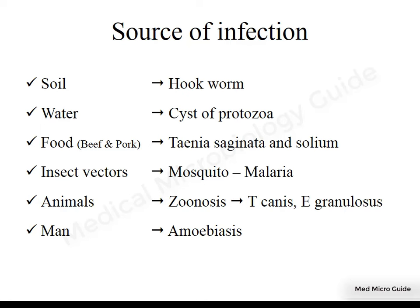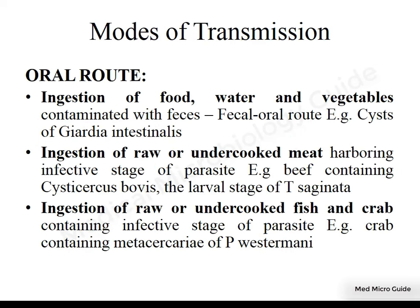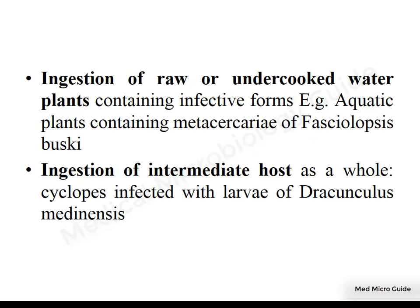There are various sources from which human beings can acquire parasitic infections: soil, water, food, insects, animals, and also man himself can act as a source of infection. Parasites can be transmitted by various routes. The oral route is the most common, where a person can ingest food, water or vegetables contaminated with feces, or ingest raw or undercooked meat, fish or crab, raw or undercooked water plants, or an intermediate host itself.